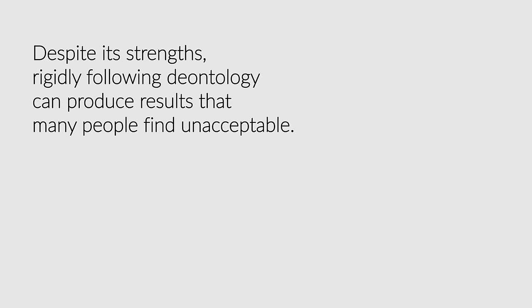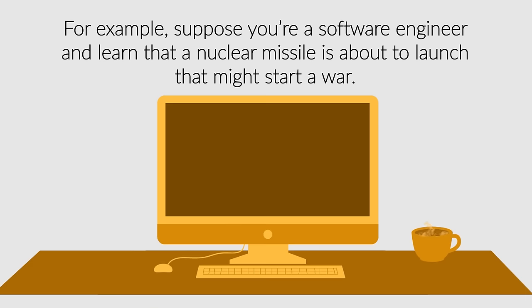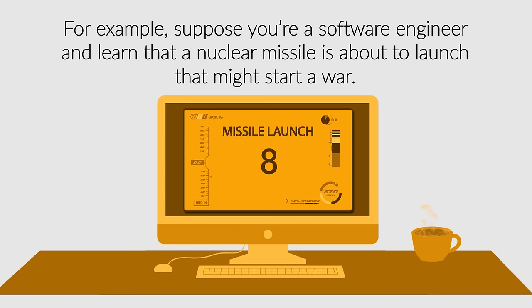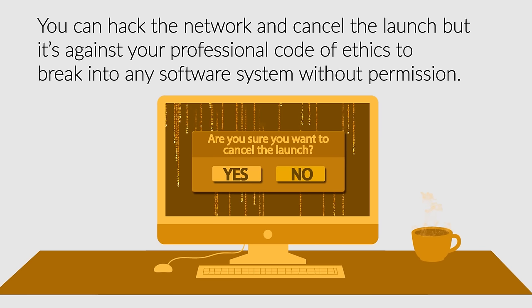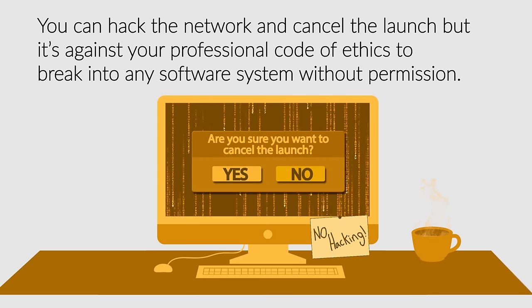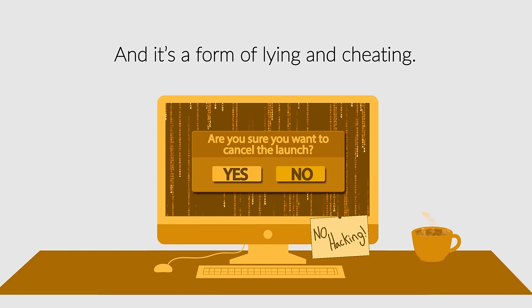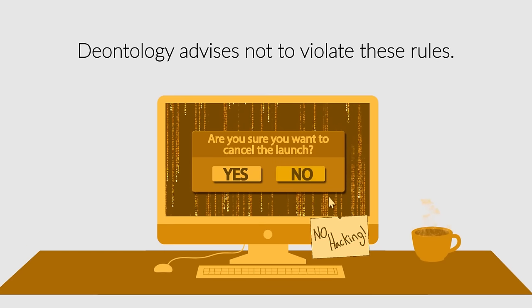Despite its strengths, rigidly following deontology can produce results that many people find unacceptable. For example, suppose you're a software engineer and learn that a nuclear missile is about to launch that might start a war. You can hack the network and cancel the launch, but it's against your professional code of ethics to break into any software system without permission, and it's a form of lying and cheating. Deontology advises not to violate these rules.